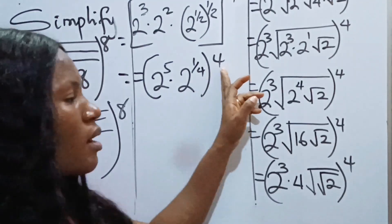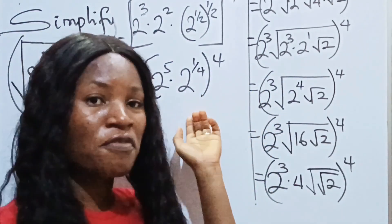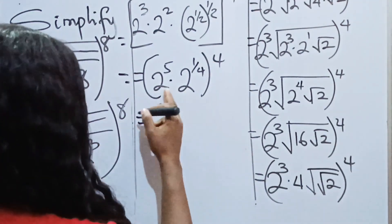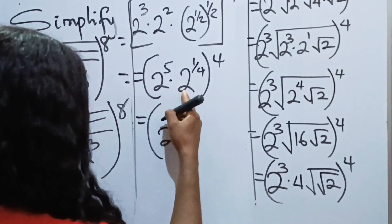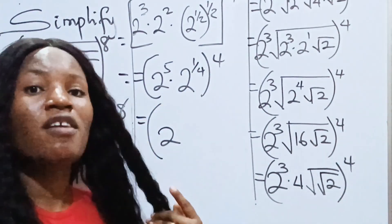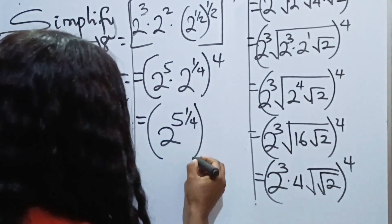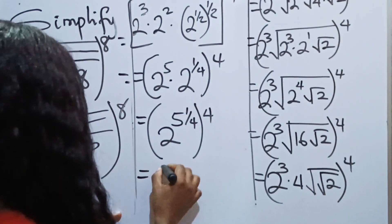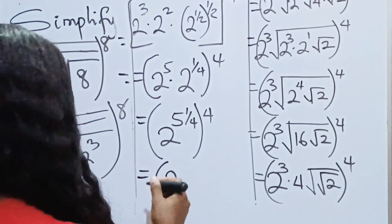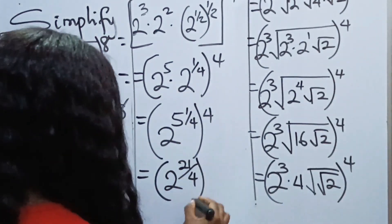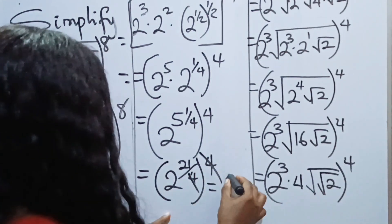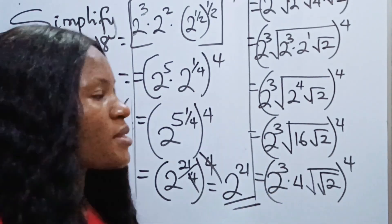Recall — don't be tempted to cancel the 4 straight away. Because of BODMAS or PEMDAS, we solve the bracket first. Since we have the same base multiplying, we add the powers: 5 plus one quarter gives us 5 and one quarter, which as an improper fraction is 21 over 4. With everything raised to the power of 4, the exponent becomes 21 over 4 times 4, giving us 2 to the power of 21 — the same answer as we got using the first method.